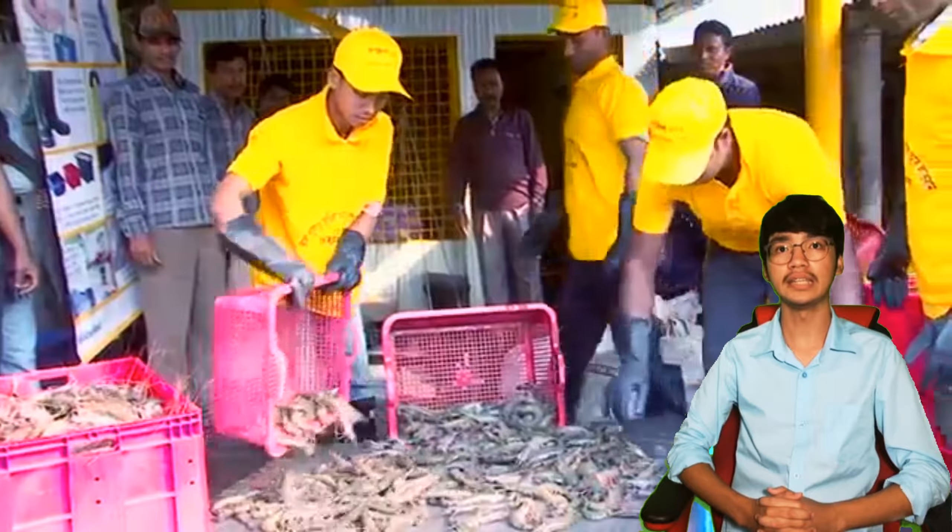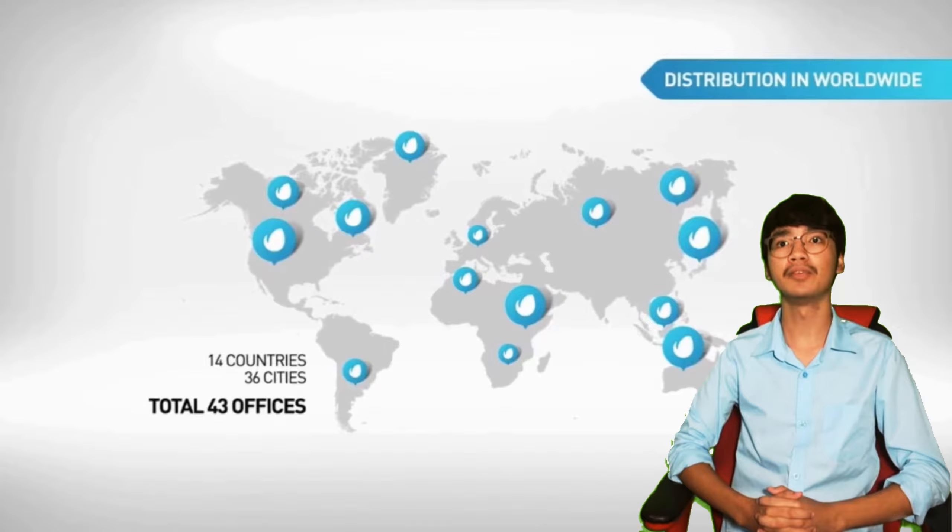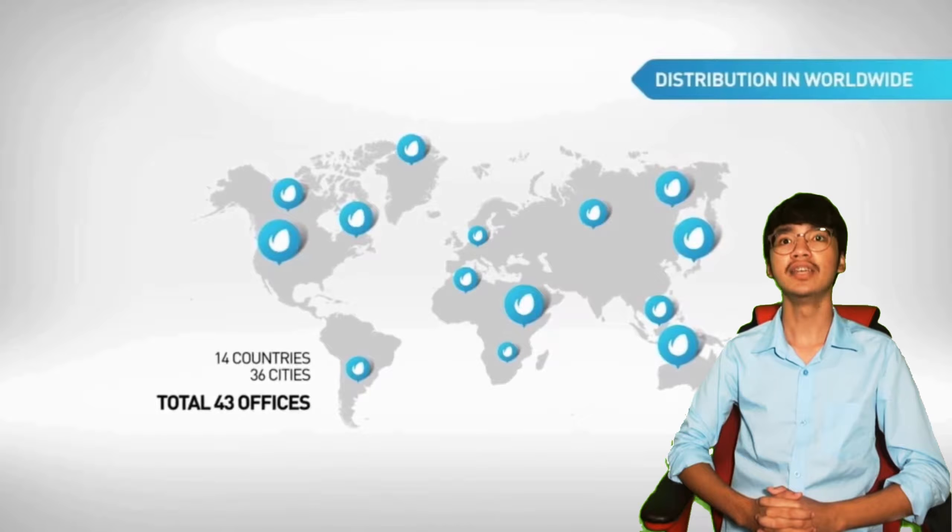Prawns are the most important commodity by value in the international seafood trade. The major destinations of the Philippine prawn exports are USA, Japan,